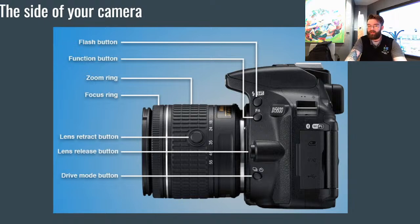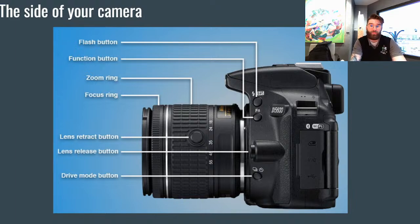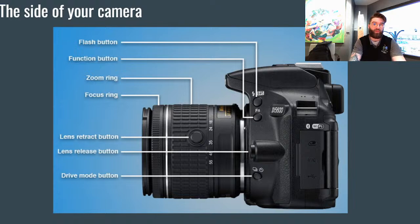Underneath that, you have the function button. Function button can be multitudes of different things based on the camera you have, and most function buttons you can actually manipulate and set to what you want. Click the FN button — it's typically a way to get into settings to change things like your autofocus and white balance. The function button kind of acts as a quick settings button rather than going into the full physical layout of the camera.